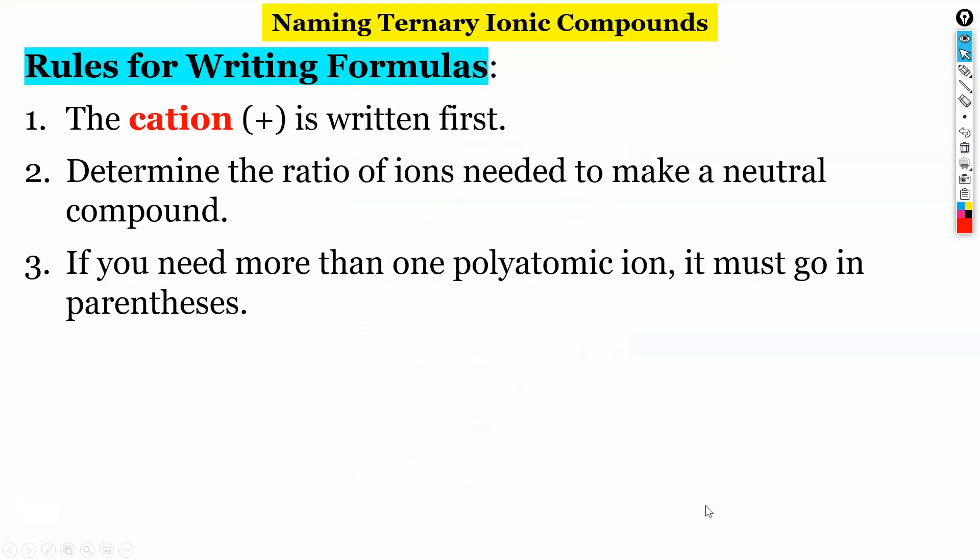When we go to write our formulas, these are the rules. The cation goes first. First, we determine the ratio of ions needed to make a neutral compound. This is just like what we were doing before. The tricky part is if we need more than one polyatomic ion, it needs to go in parentheses. We're treating that like it's its own ion. So we want to make sure that we don't confuse it with anything. So we're going to use parentheses to contain it.